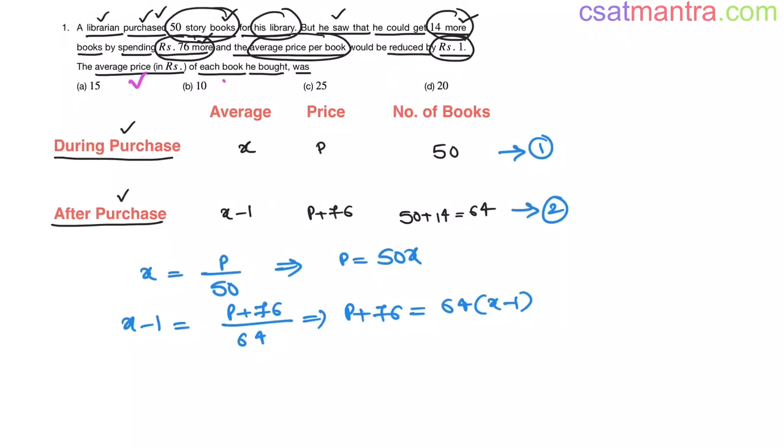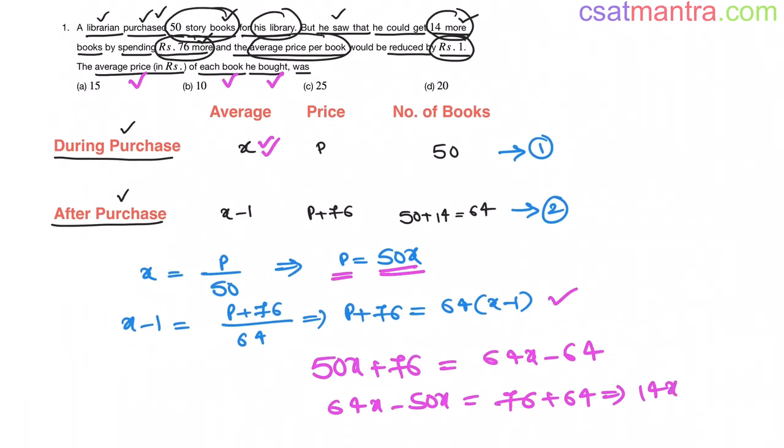Now, we want average price of each book he bought. He bought each book at an average of X rupees. X is the value we want. Now, substituting P is equal 50X in this equation. 50X plus 76 is equal 64X minus 64. So, 64X minus 50X is equal 76 plus 64. So, this is 14X is equal 140. 76 plus 64 is 140. Now, X is equal 10 rupees. So, our answer is B.